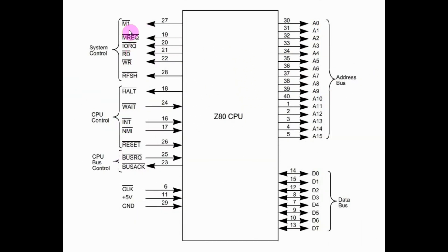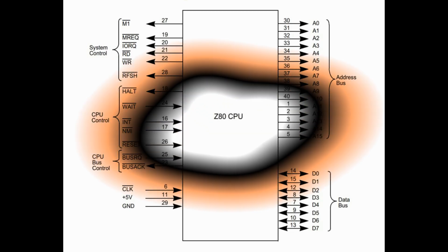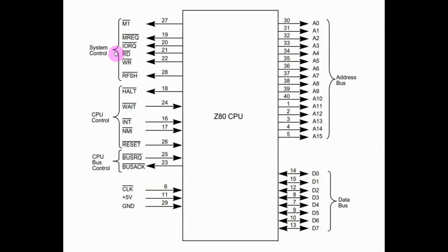These control lines are connected to the control bus of the microcomputer, and they are divided into three parts: system control, CPU control, and CPU bus control. The system control has the following lines: M1, which is machine cycle 1, indicating that the processor is fetching the opcode of the instruction. We also have memory request, IO request, read, write, and refresh. All of these signals are active low.